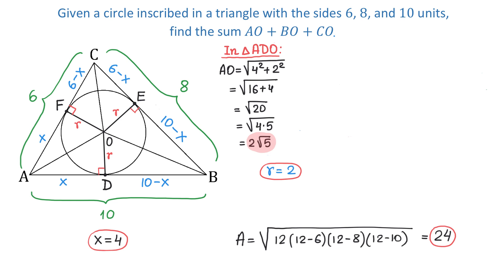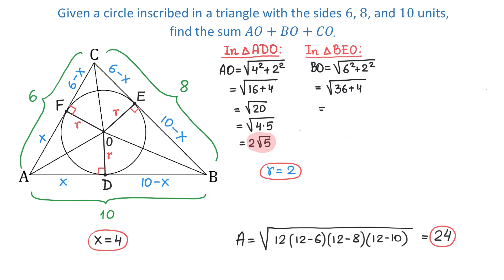Let's take a look at triangle BEO. In this triangle, side BE is 10 minus X, and replacing X with 4 gives 10 minus 4 equals 6. Side EO is R, and R equals 2. Using the Pythagorean theorem, BO equals the square root of 6 squared plus 2 squared. Then 6 squared equals 36 and 2 squared equals 4, so BO equals square root of 40. Writing 40 as 4 times 10, we get BO equals 2 root 10.